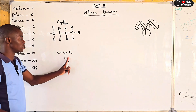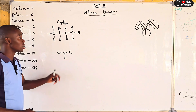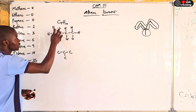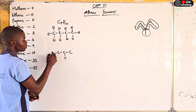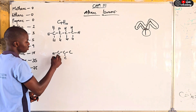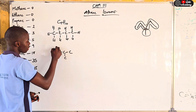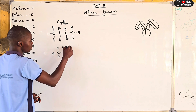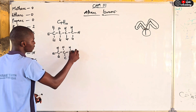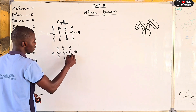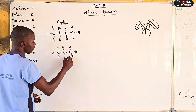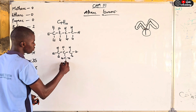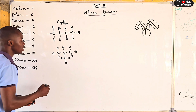So this is the longest carbon chain, and this is the branching. Counting the hydrogens: one, two, three, four, five, six, seven, eight, nine, ten — still ten hydrogens total.